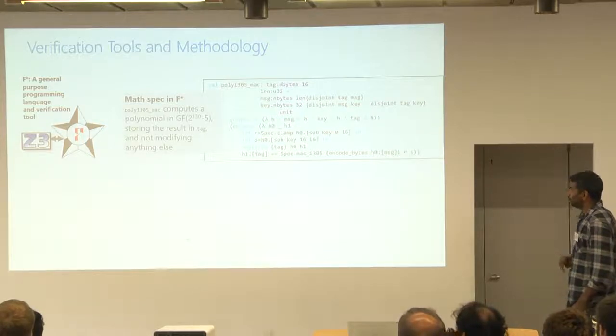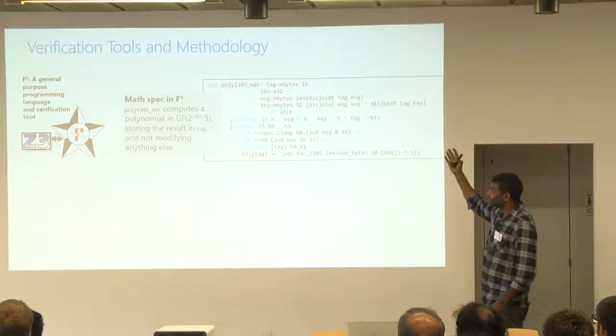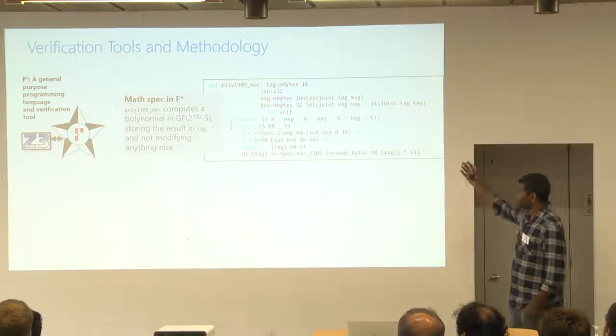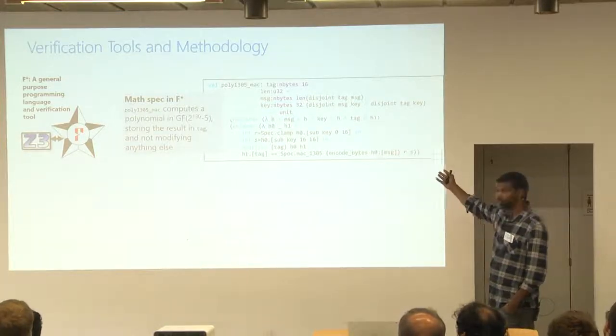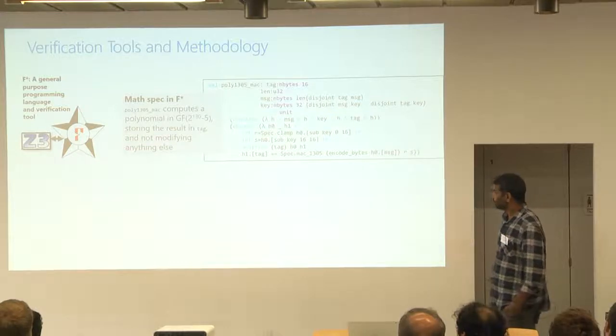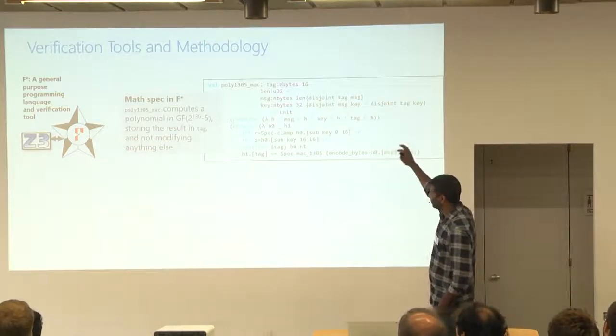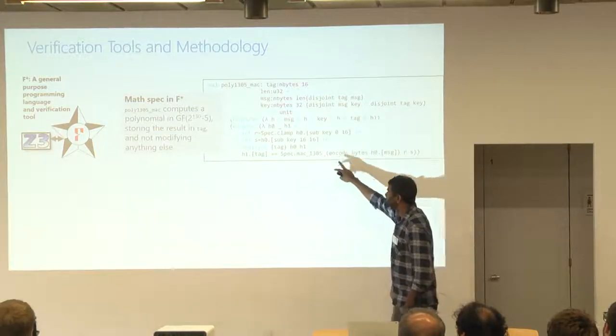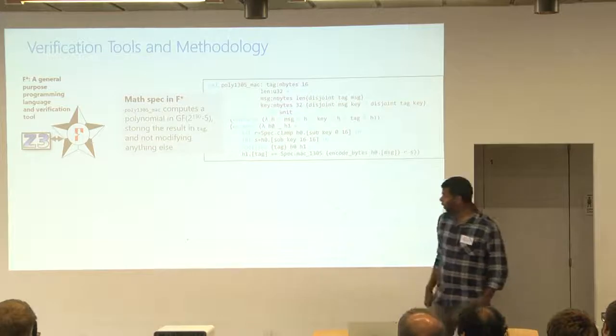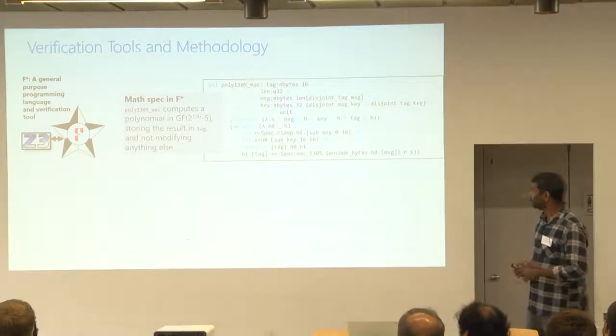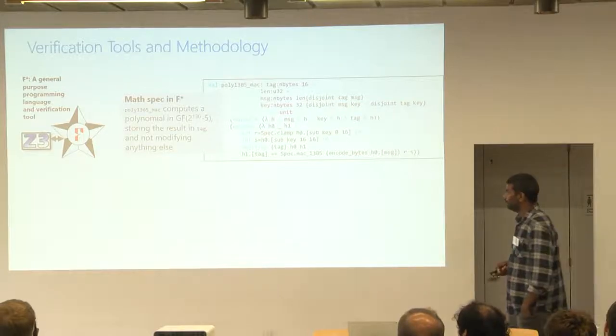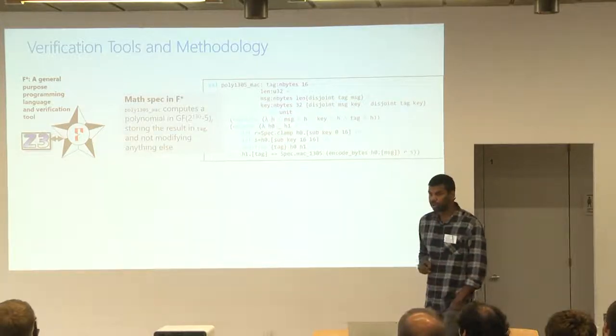Roughly the way it works is that in F-star, you write a program, and you decorate it with a specification. That's a mathematical specification of what the program's intended behavior is. So here, for instance, is poly1305, is a MAC algorithm used in TLS. And here's a spec for a low-level implementation of poly1305 that says, you don't have to read the details too much, but what it's saying is roughly that this is a stateful function that's computing a MAC in a specification of this MAC, where the specification is saying that this is some polynomial in the finite field that poly1305 uses.